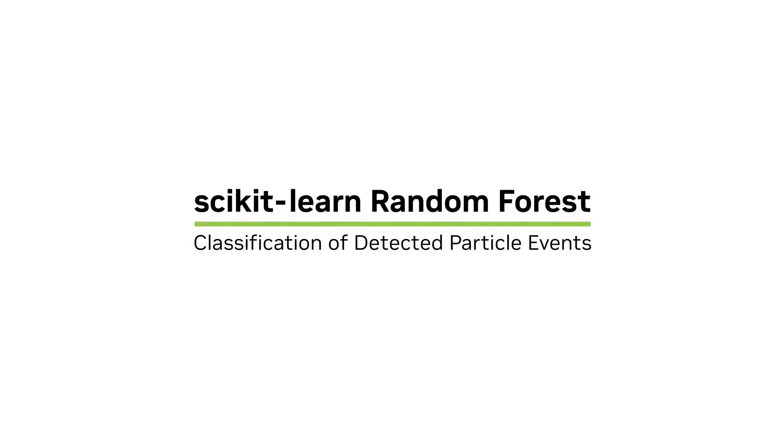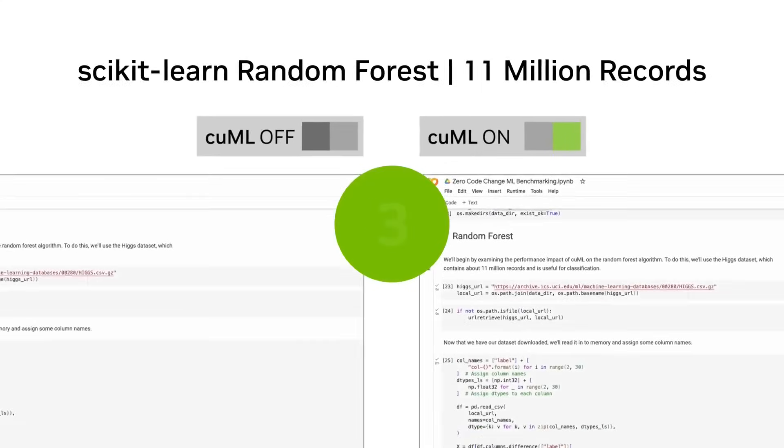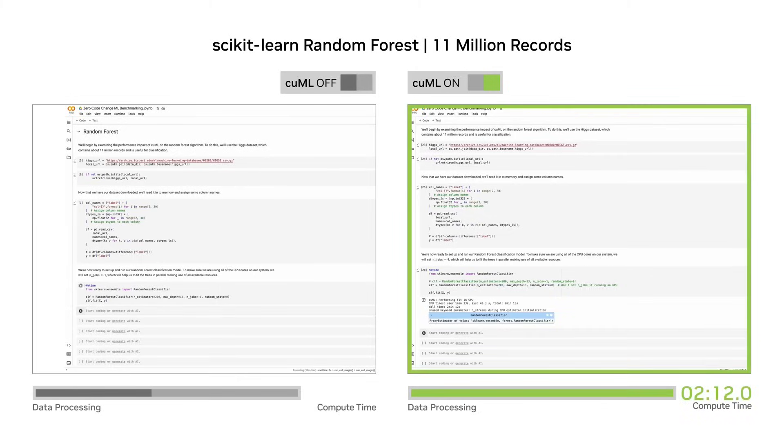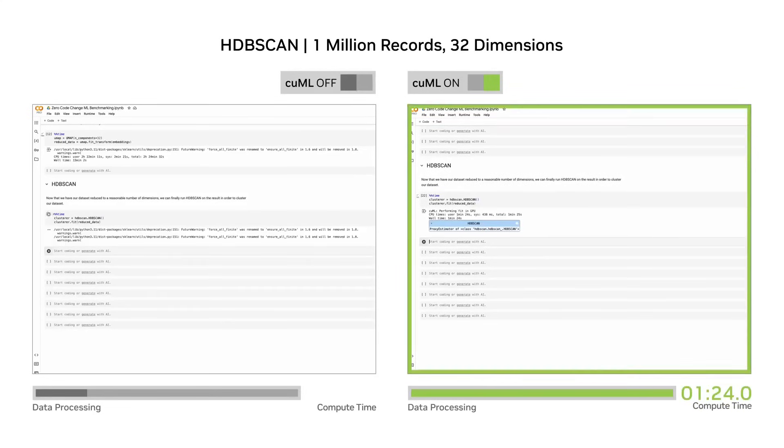Now this is different than CUML, which is Nvidia's own library for running algorithms on GPUs. It's supposedly a no-code-change implementation of Scikit-learn, so you can keep all your Scikit-learn code the same and just add one line of code and everything will run on the GPU. And as you probably already know, GPUs are super fast at doing highly parallel computation, which a lot of these algorithms are. So I'm going to put it to the test and see how fast things are, and then give my take on if I think this is a game changer or not.